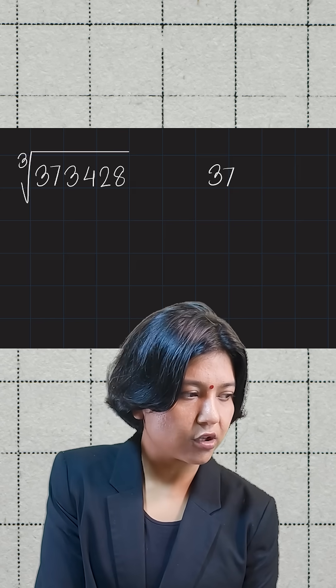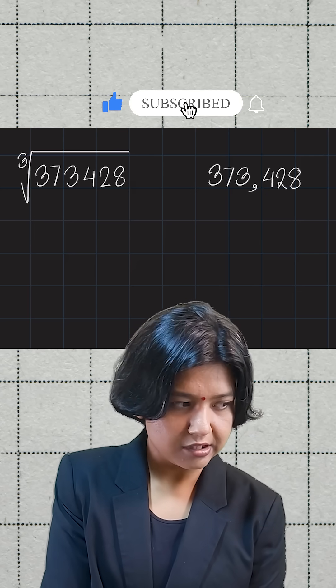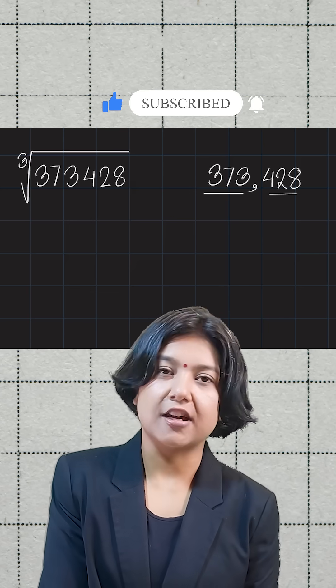So I taught you the trick. The trick is to group the numbers in terms of 3. The first 3 digits will make one group. The last or remaining digits will make another group.